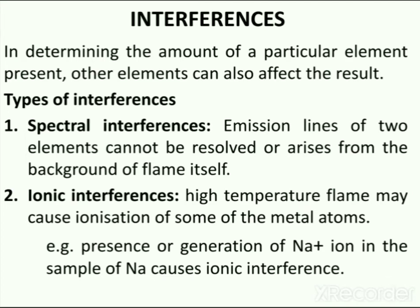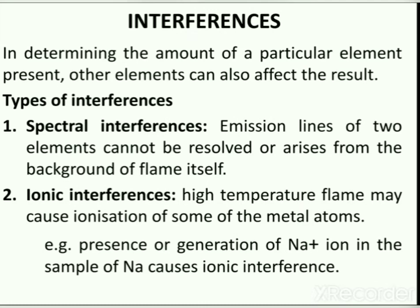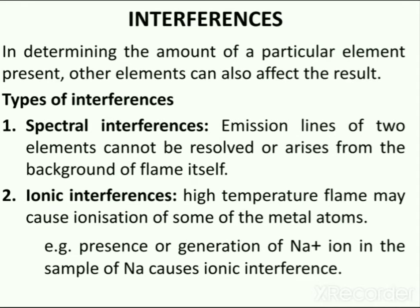Spectral interferences occur when the emission lines of two elements cannot be resolved or arise from the background of the flame itself — they are either too close, overlap, or occur due to high concentration of salts in the sample. Ionic interferences arise because high temperature flames may cause ionization of some metal atoms. For example, the Na⁺ ion possesses an emission spectrum with frequencies different from those of the atomic spectrum of the Na atom, so the presence or generation of Na⁺ in a sodium sample causes ionic interference.